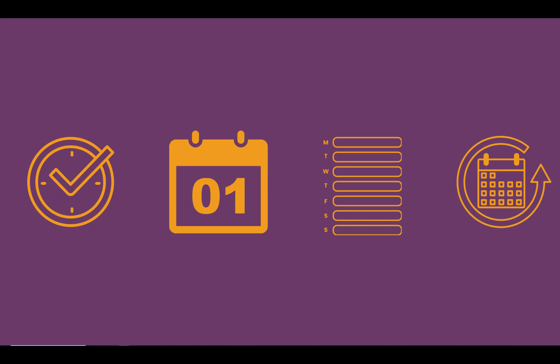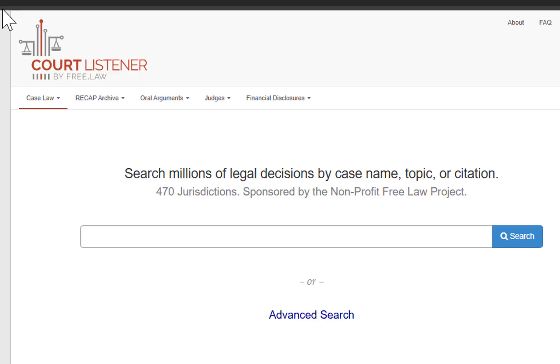You control the frequency — get alerts in real time, or batch them daily, weekly, or monthly. All CourtListener users get free alerts. Members get more. And API users can scale alerts across thousands of queries using webhooks.